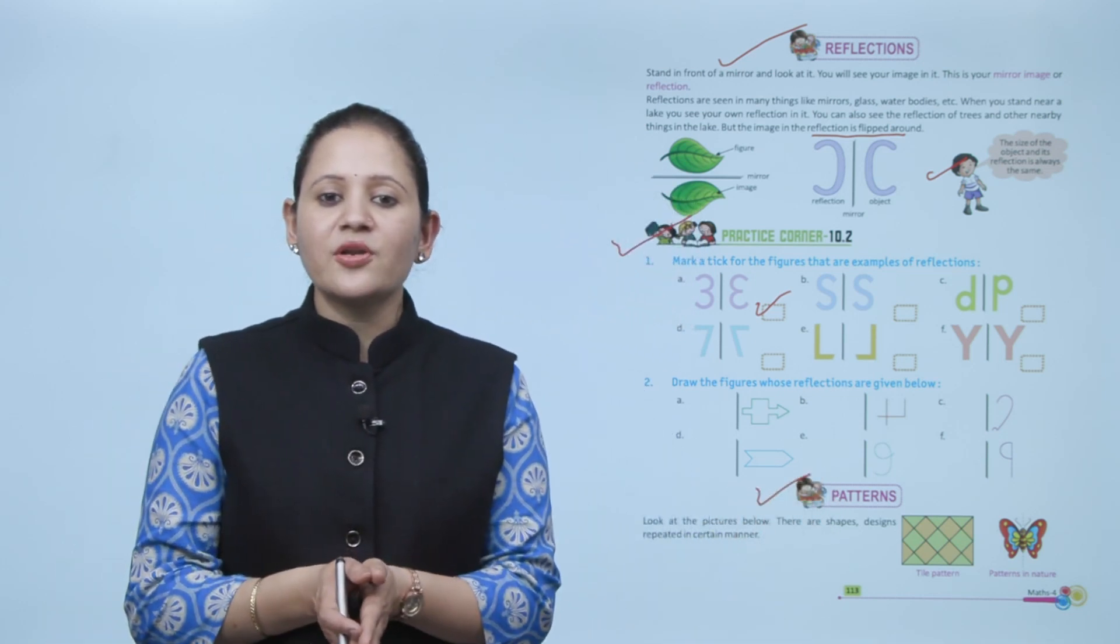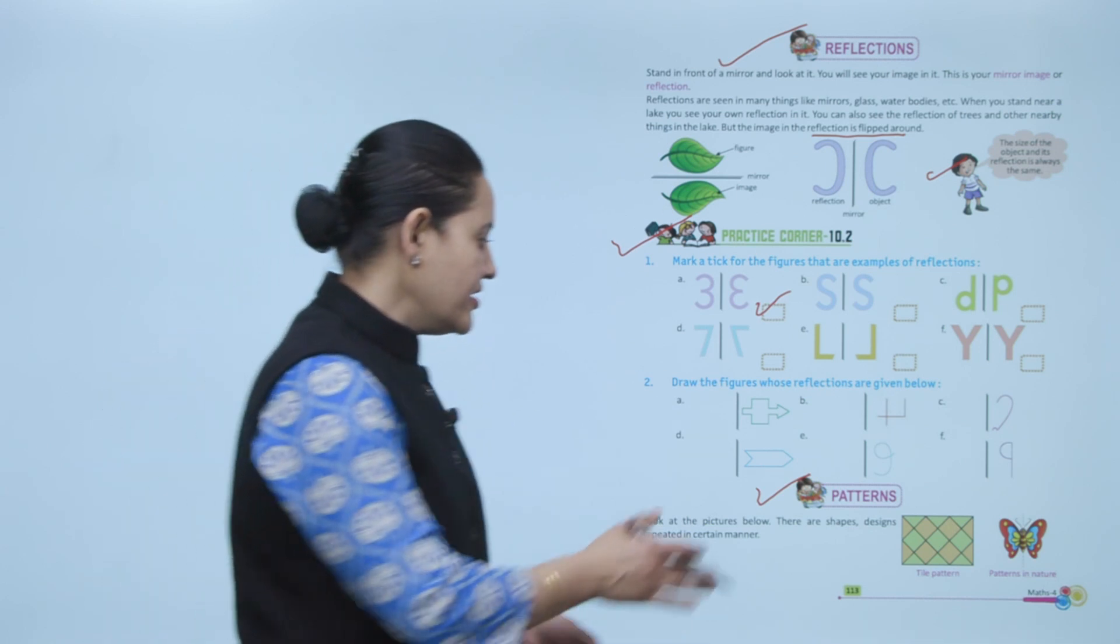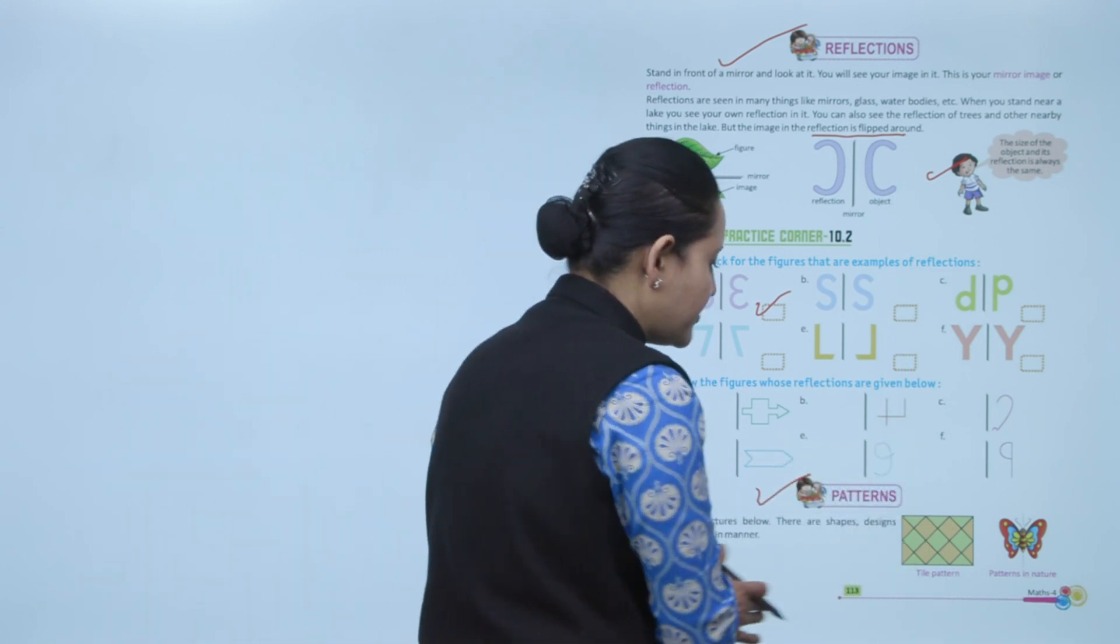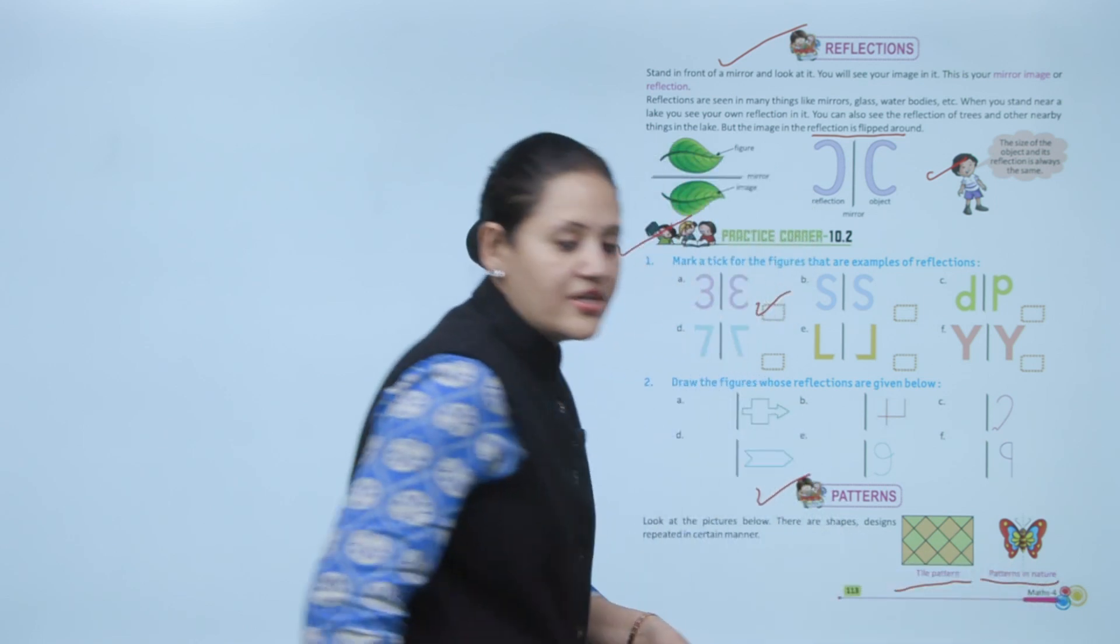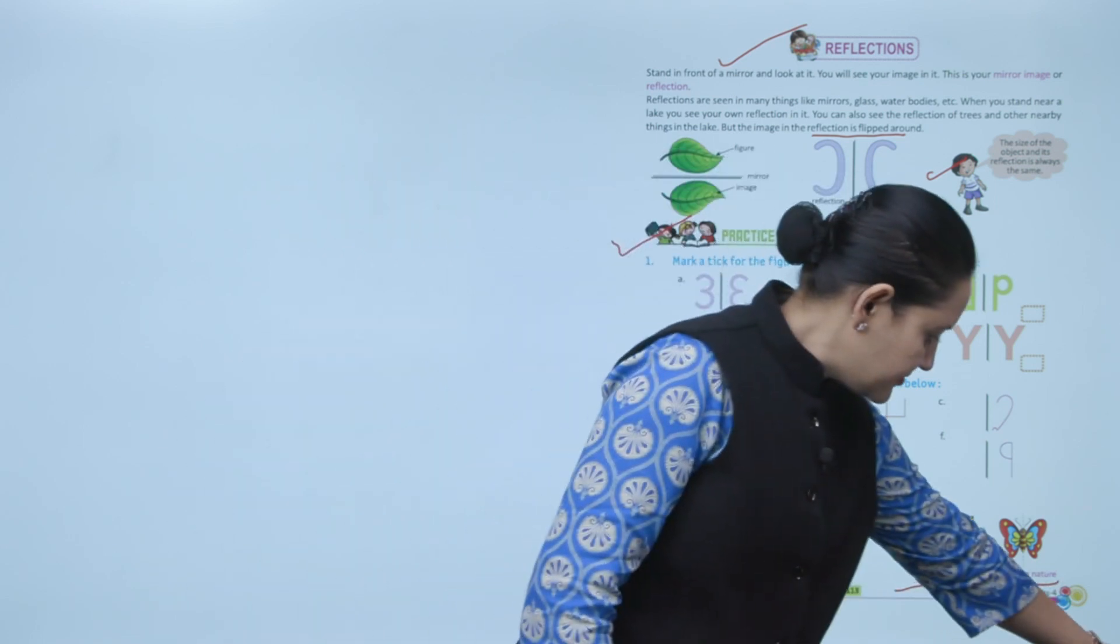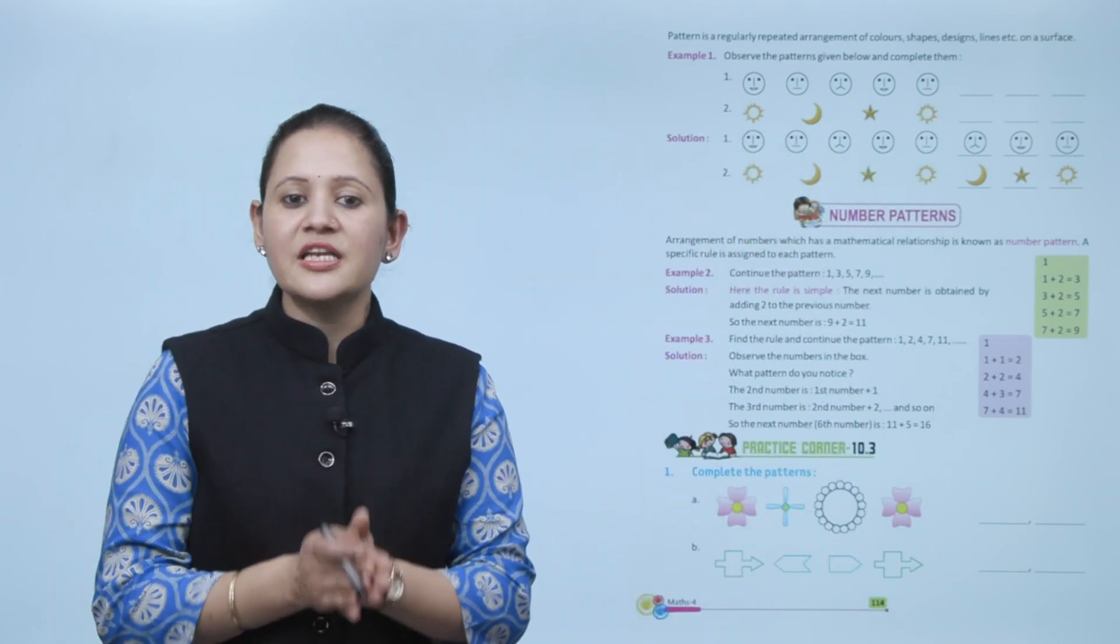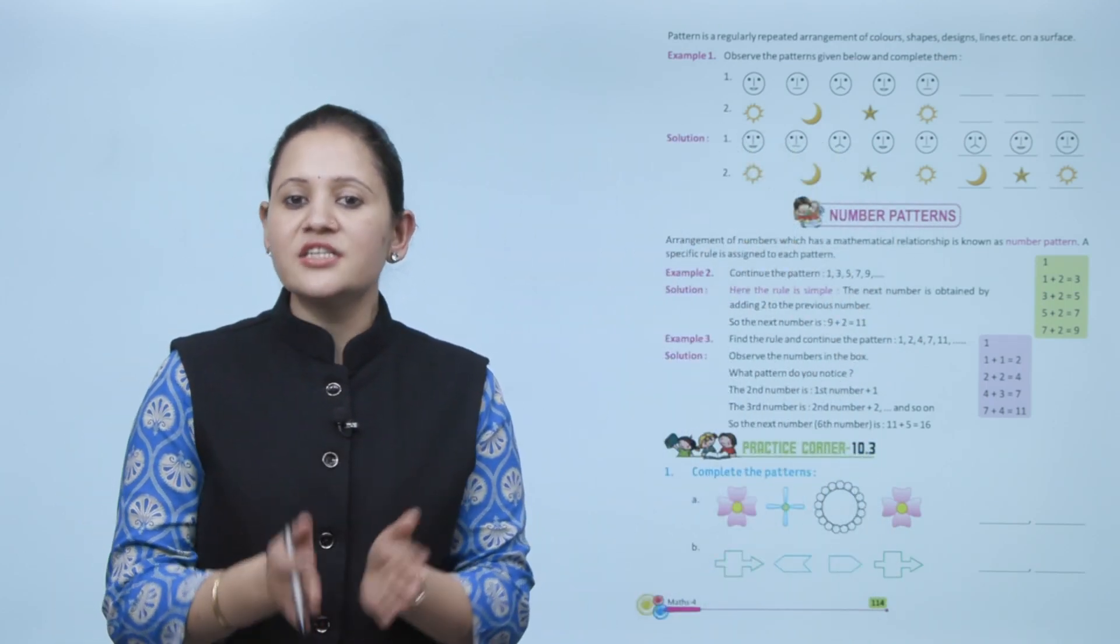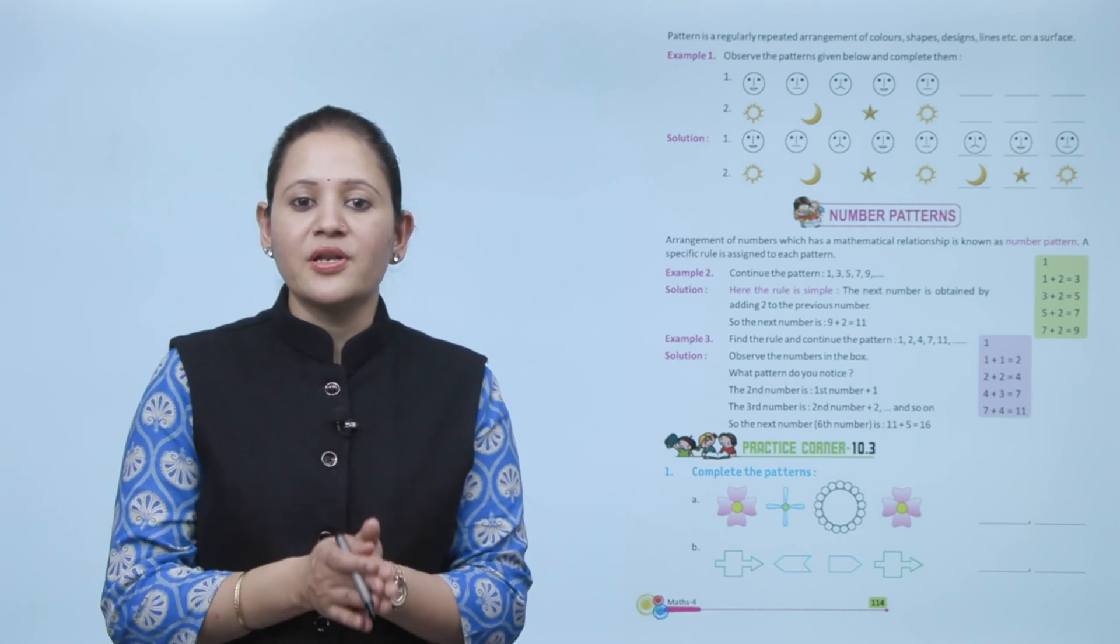Next is Patterns. Look at the picture below - there are shapes designed and repeated in a certain manner. The shapes are repeated in a certain manner, making a pattern. A pattern is a regularly repeated arrangement of color, shape, design, line, etc. on a surface.